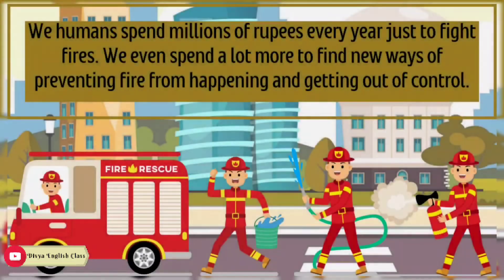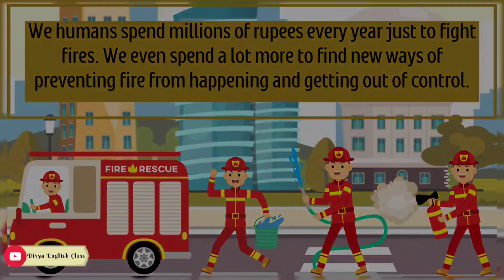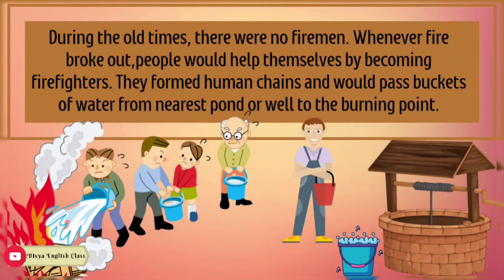We humans spend millions of rupees every year just to fight fires, and even more to find new ways of preventing fire from happening and getting out of control. During olden times, there were no firemen. Whenever fire broke out, people would help themselves by becoming firefighters. They formed human chains and would pass buckets of water from the nearest pond or well to the burning point.